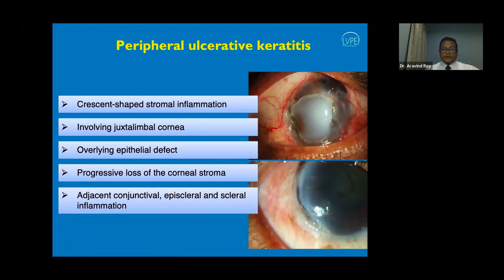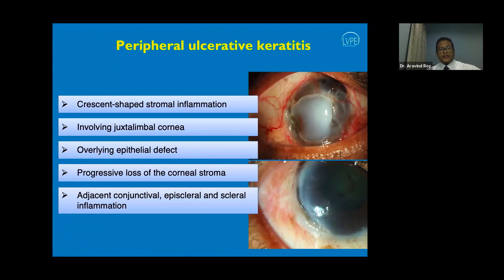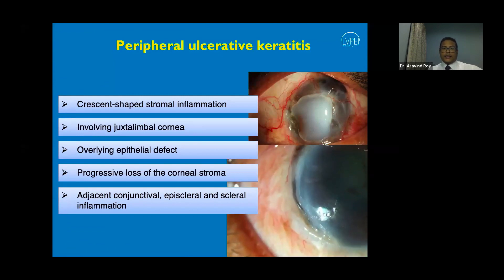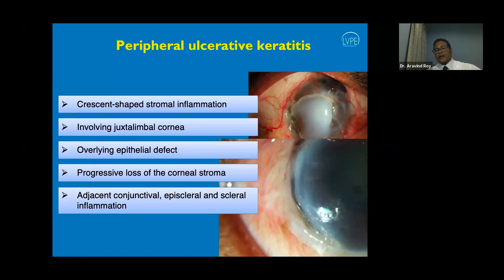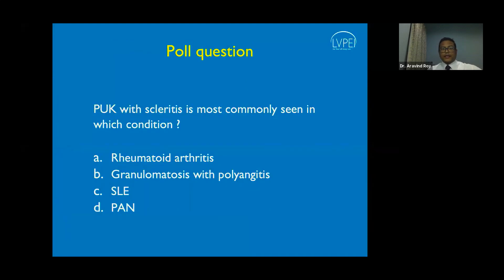Peripheral ulcerative keratitis (PUK) is another very common entity in anterior segment practice. PUK presents with a crescent-shaped stromal inflammation involving the limbal cornea, with an overlying epithelial defect, progressive loss of corneal stroma, and possible corneal perforation. The adjacent conjunctiva, episclera, or sclera may also be involved.